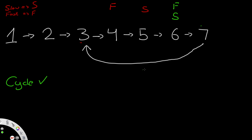For comparison, if seven had pointed to null, once the fast pointer reached seven it wouldn't have anywhere to go and would never reach the slow pointer. In that case, we'd return none since there is no cycle.